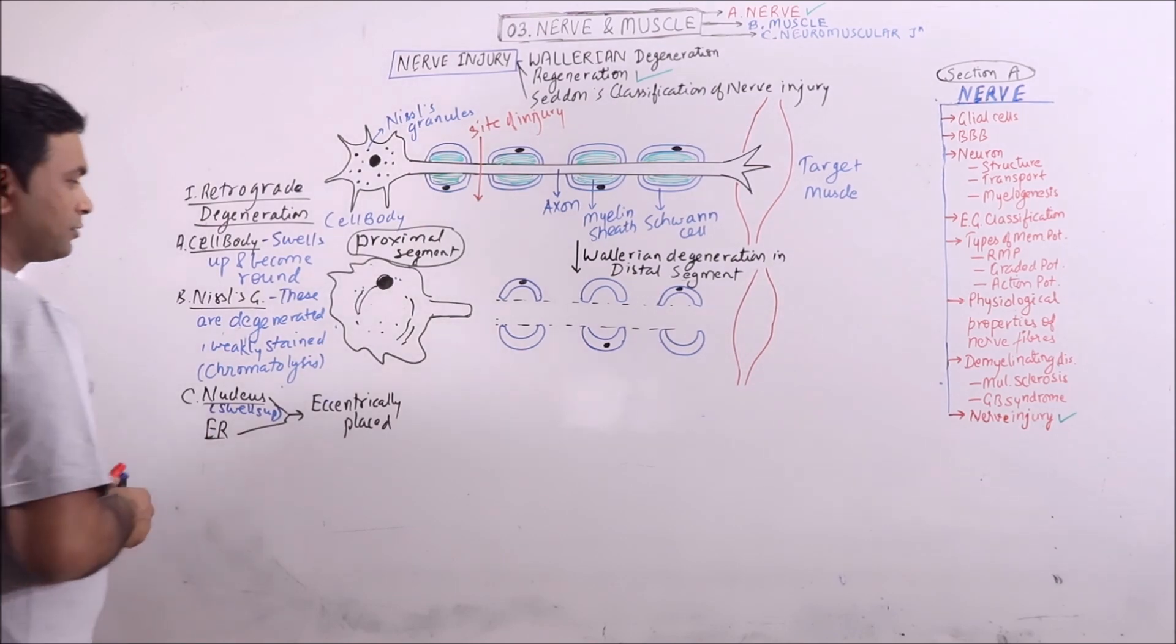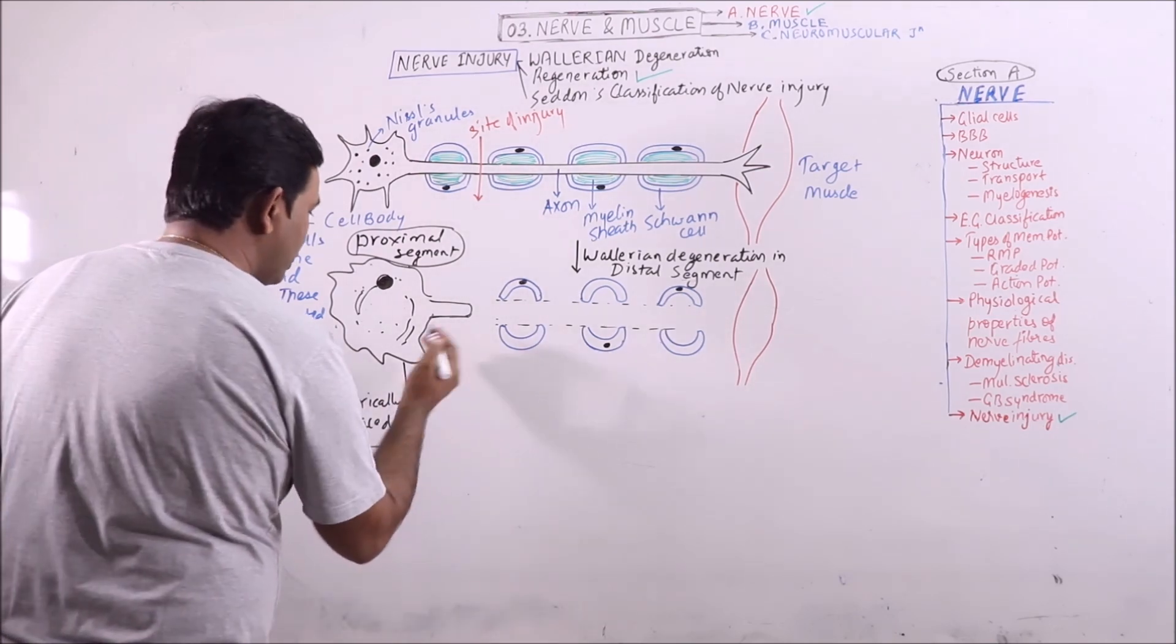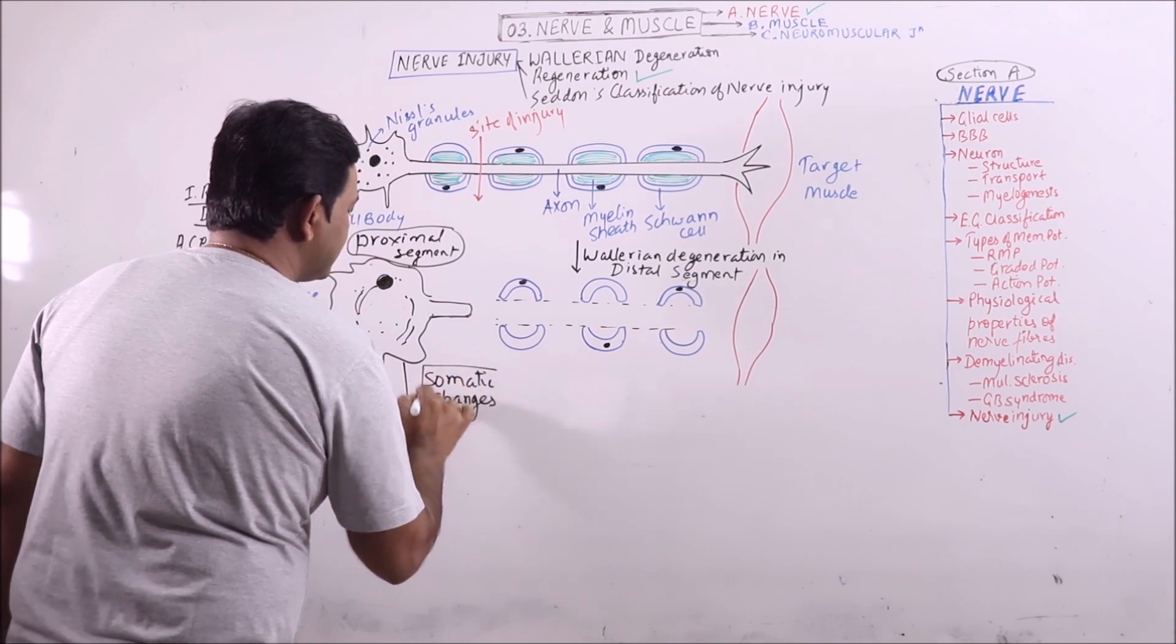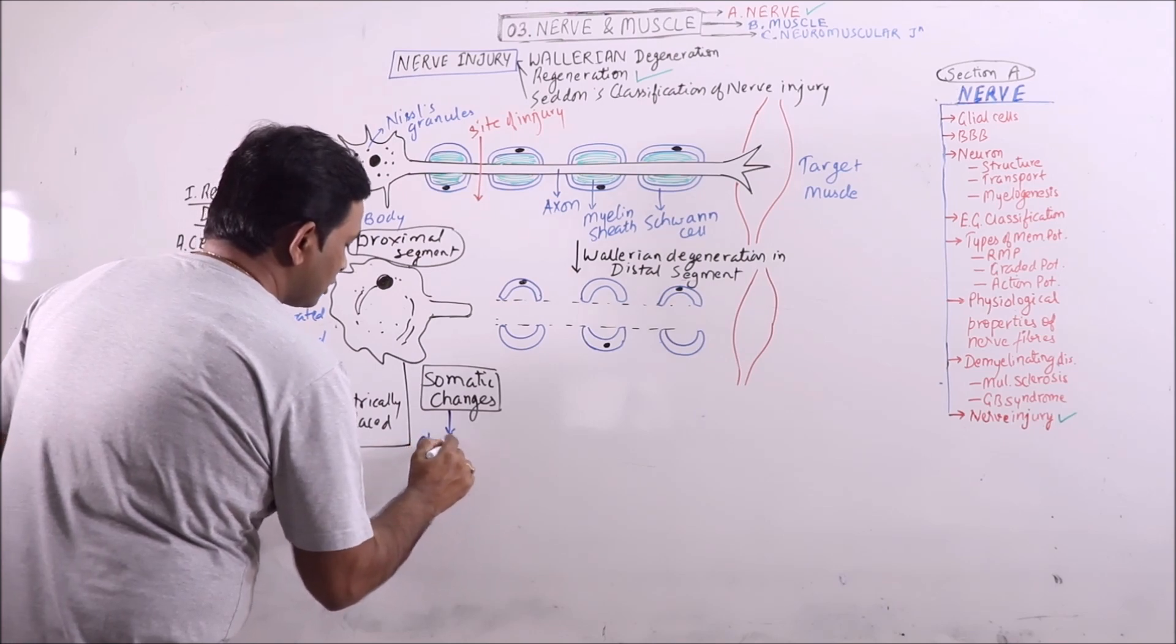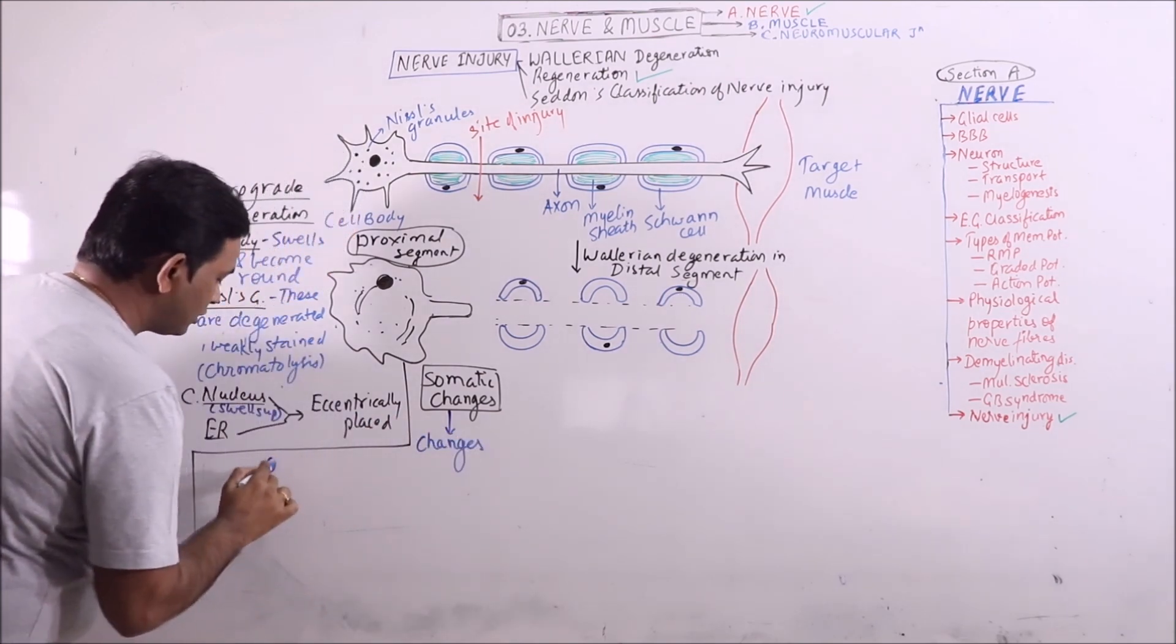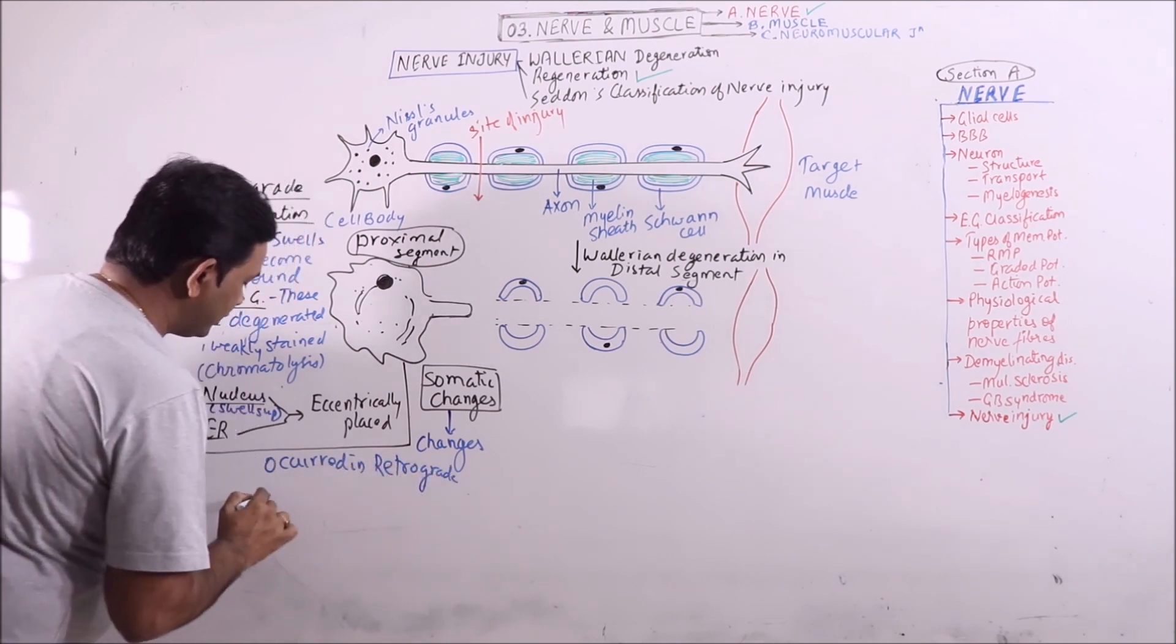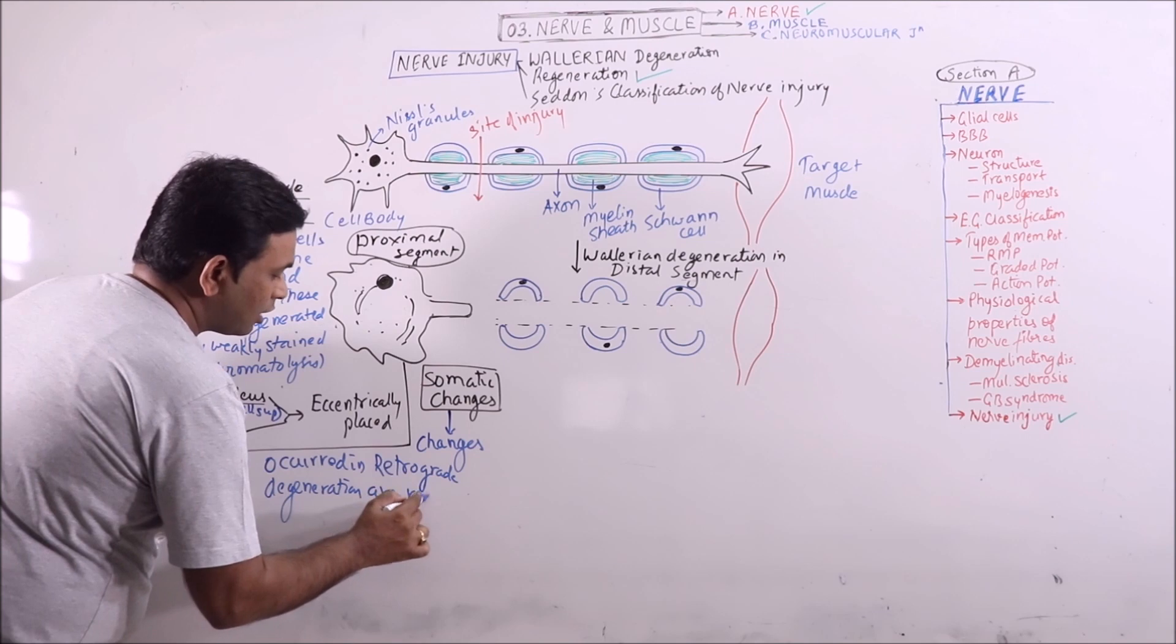Now, after some time regeneration will occur and these events of regeneration will include first somatic changes in retrograde changes or changes in soma in which the changes that have occurred in retrograde degeneration are reversed.